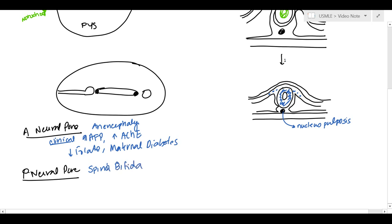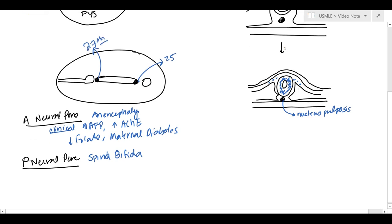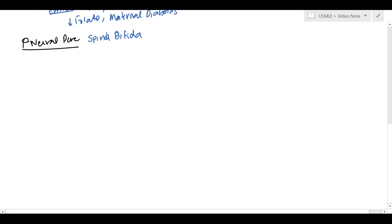And we'll kind of go into that later. And so, the anterior pore closes first on the 25th day, and then the posterior tube closes on the 27th day as well. Now, let's just kind of look at how the brain is going to continue to develop.